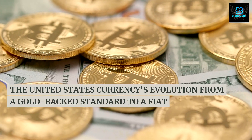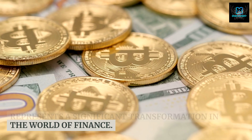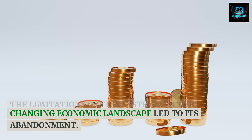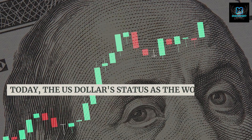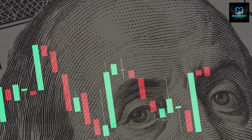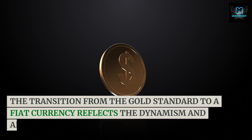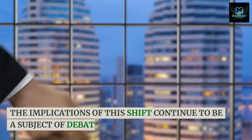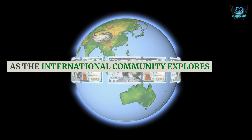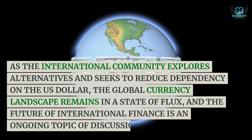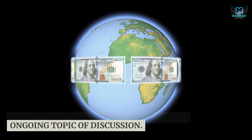The United States currency's evolution from a gold-backed standard to a fiat system represents a significant transformation in the world of finance. While the gold standard provided stability, its limitations and the changing economic landscape led to its abandonment. Today, the U.S. dollar's status as the world's primary reserve currency highlights the United States' economic strength and global influence. The implications of this shift continue to be debated as the international community explores alternatives and seeks to reduce dependency on the U.S. dollar, leaving the global currency landscape in a state of flux.